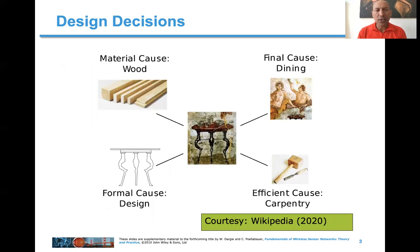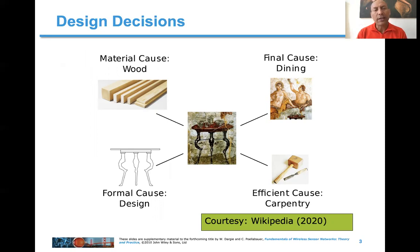I begin today's lecture by referring to Aristotle's four causes. Aristotle asserts that the existence of a given object can be explained by four different causes. In other words, he asserts that four different causes are essential to bring an object into existence. Without these four causes, the object cannot be realized.